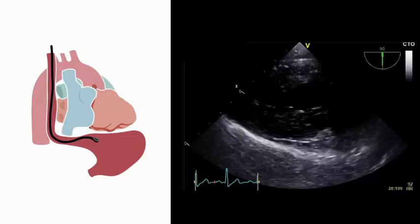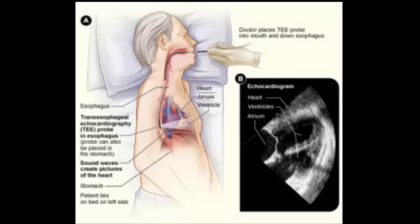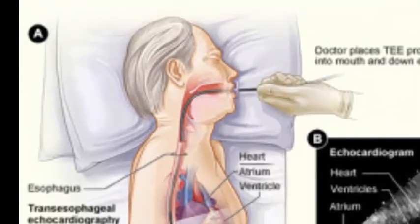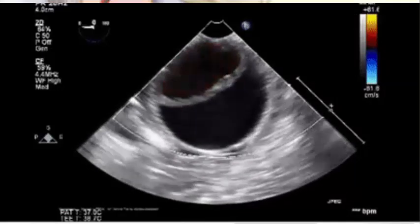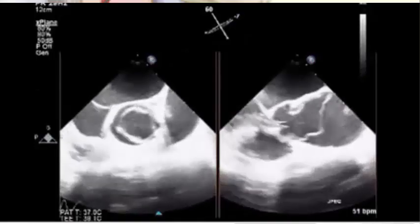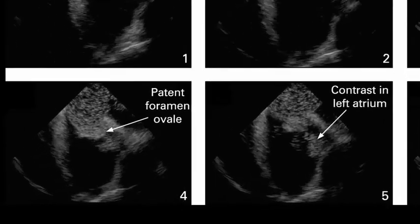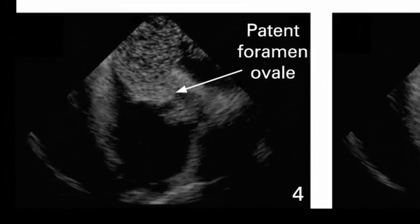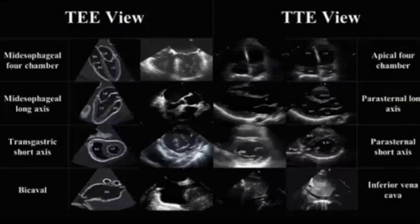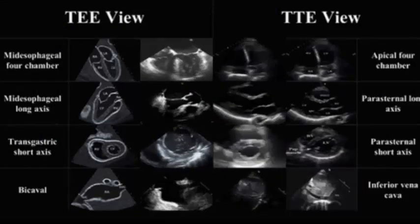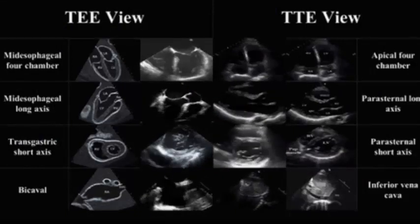Transoesophageal echocardiography (TEE) uses an endoscope-like ultrasound probe passed into the oesophagus and positioned immediately behind the left atrium. This produces high-resolution images, making TEE particularly valuable for investigating prosthetic (especially mitral) valve dysfunction, congenital abnormalities such as atrial septal defect, aortic dissection, infective endocarditis vegetations too small to be detected by transthoracic echo, and systemic embolism.